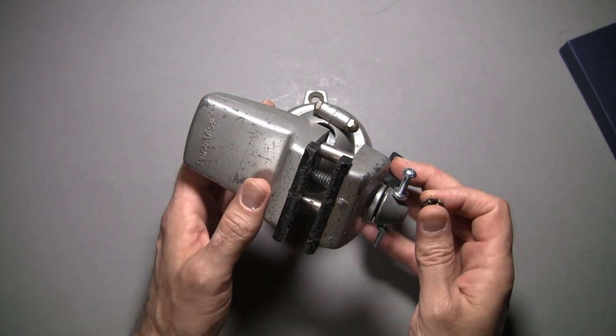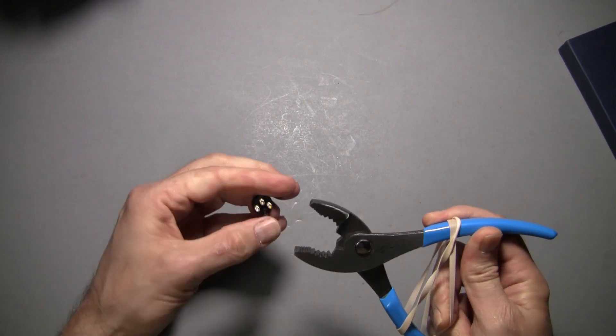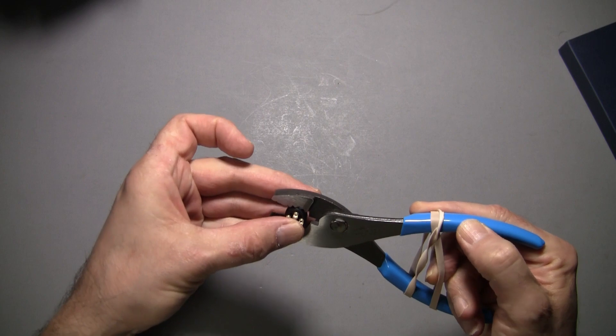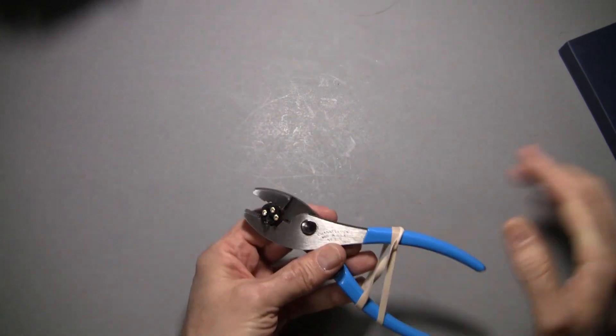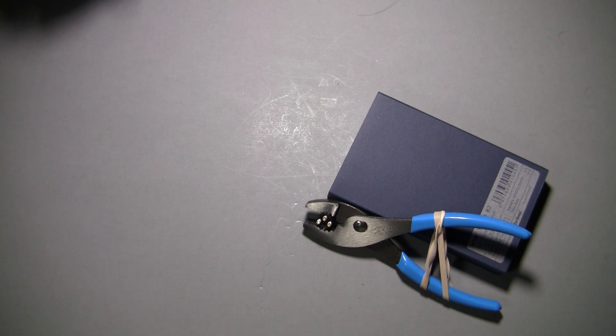If you don't want to spend the money right now on a vise, what you can do is just wrap a rubber band around a pair of pliers. And that doesn't do too bad. If you're only doing a few connectors, that does the job.